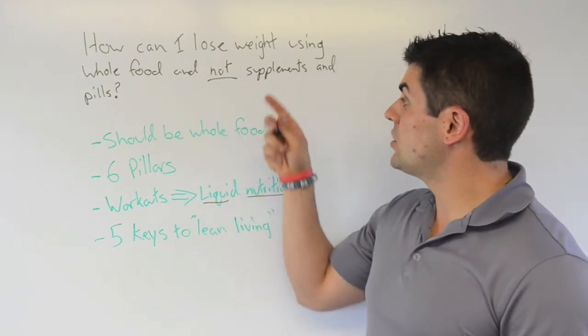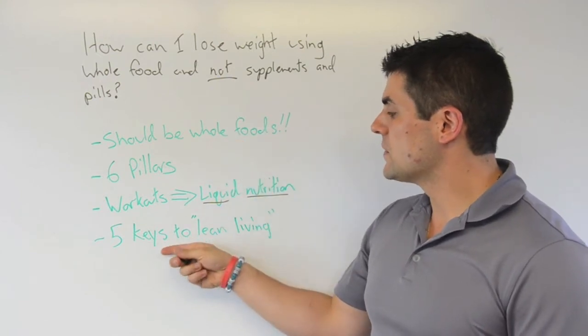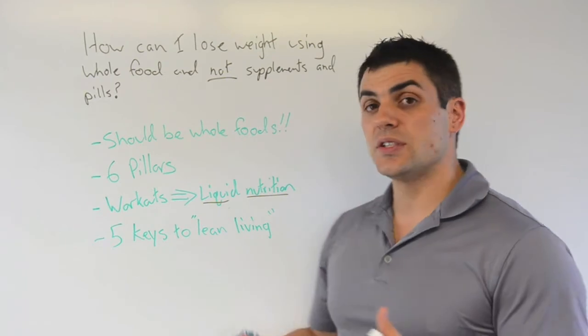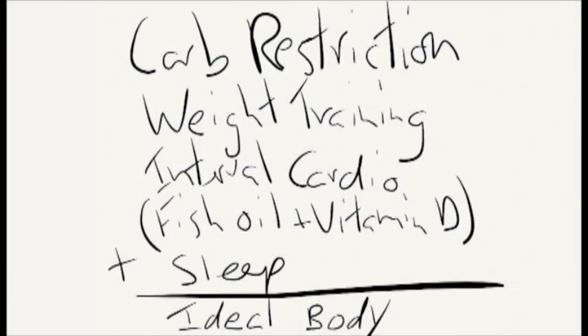So there are five keys that I've kind of outlined to lean living. And I'll throw up a slide so you can see those five keys right now. And so basically, it doesn't involve pills or supplements. It's carbohydrate restriction, it's weight training, it's interval cardio,